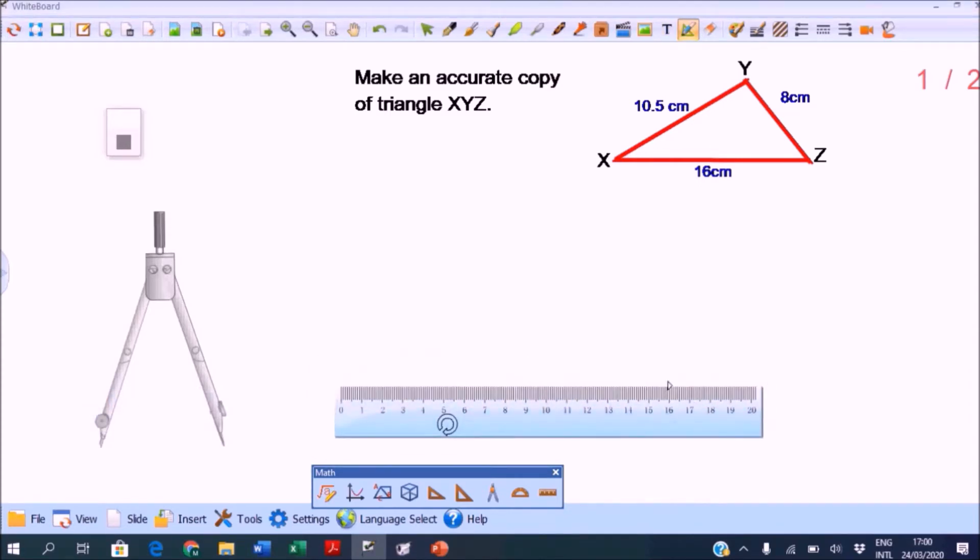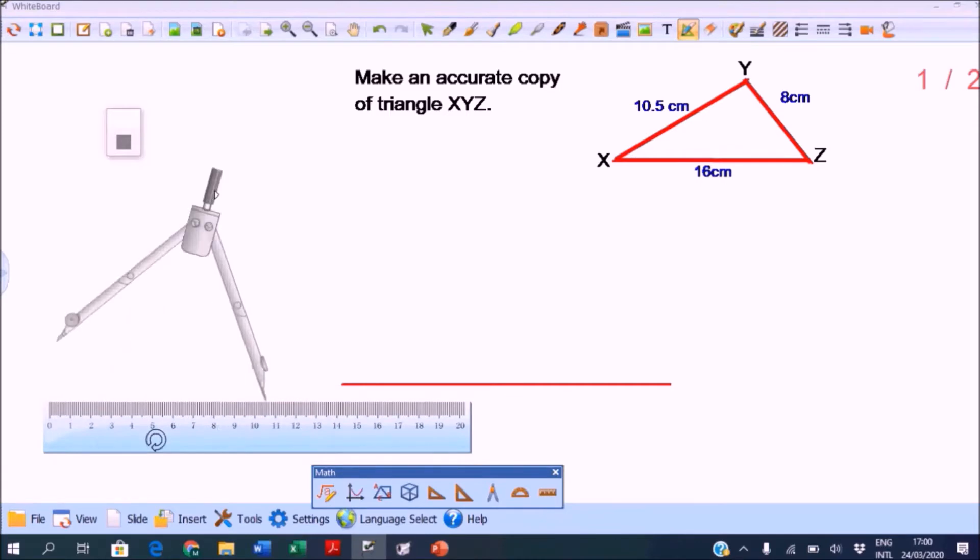We will use the compass to mark the top corner Y. First open your compass to 10.5 centimeters, the longer side. Make sure that it's 10, then put the middle of your compass on one endpoint of your line and mark an arc on top of your base line.